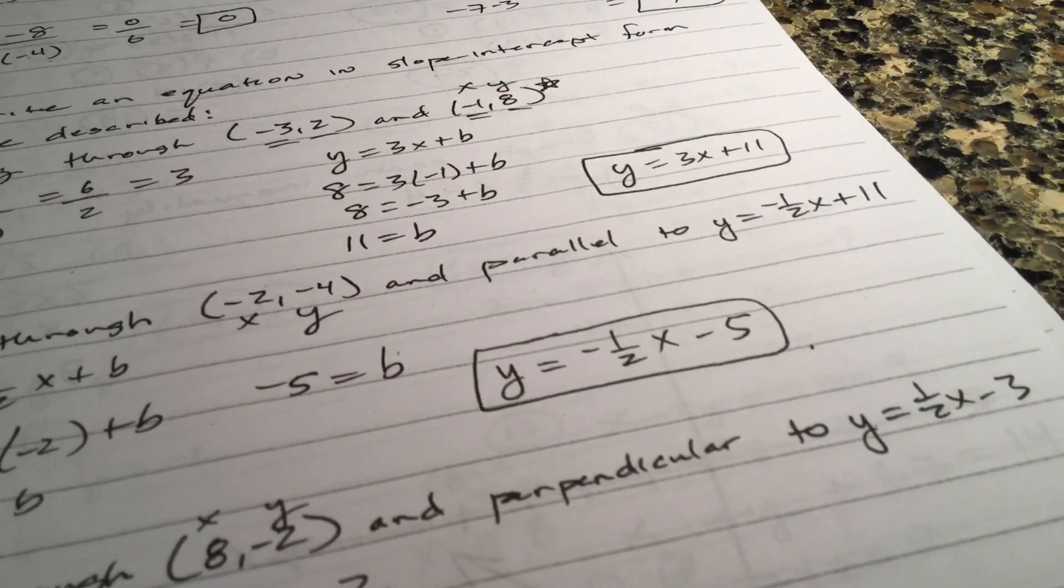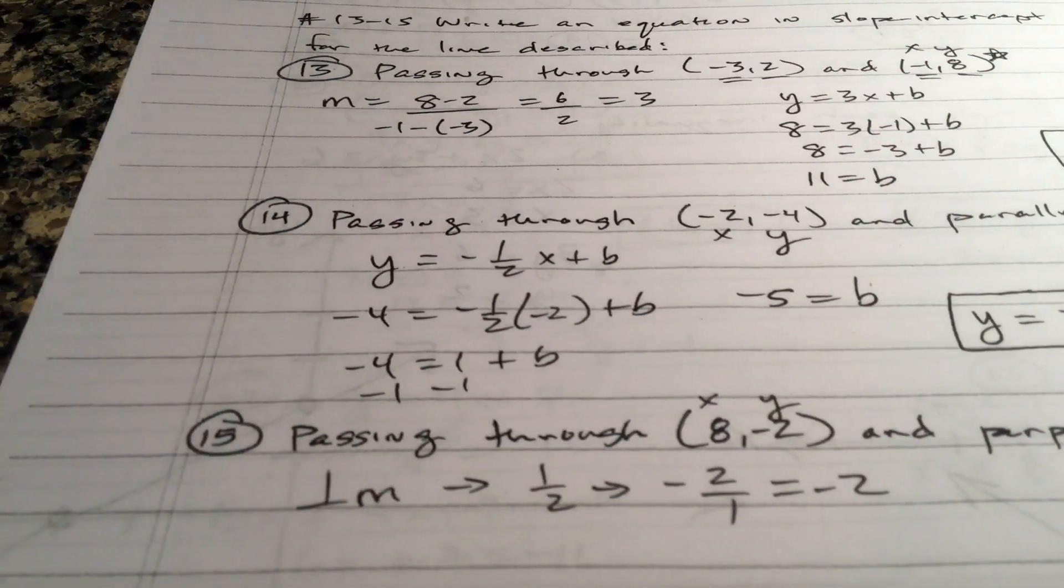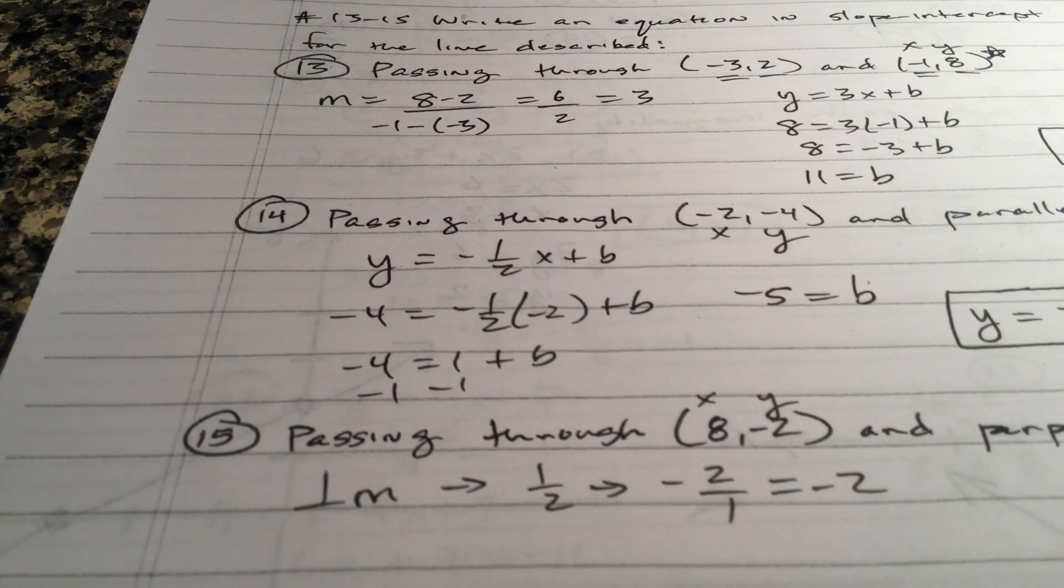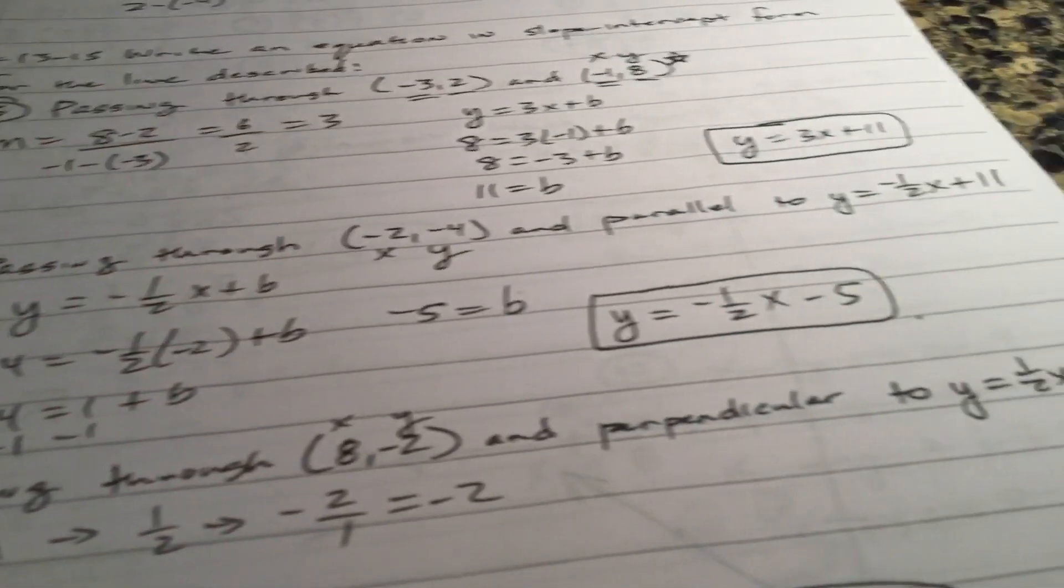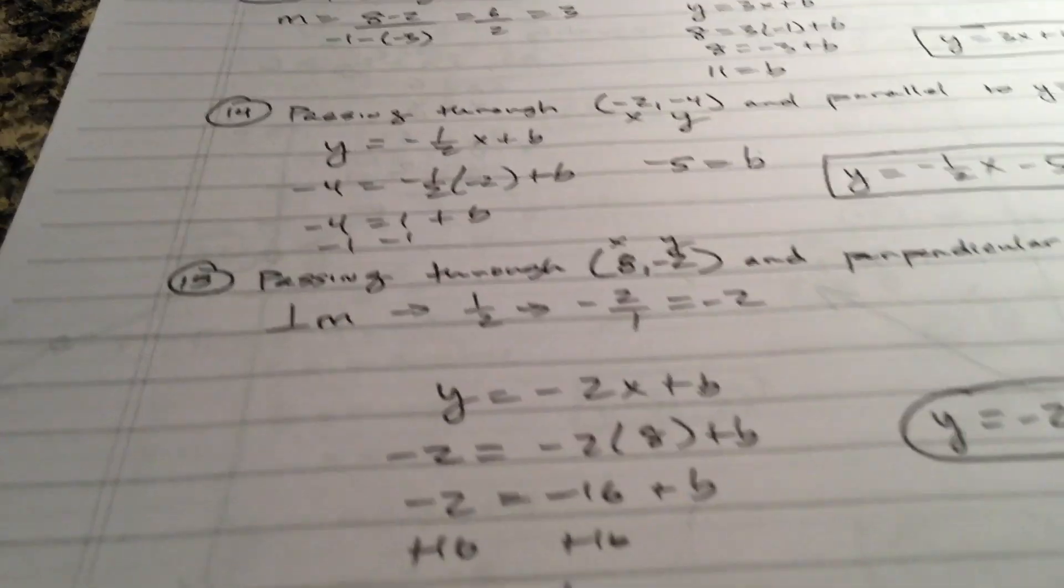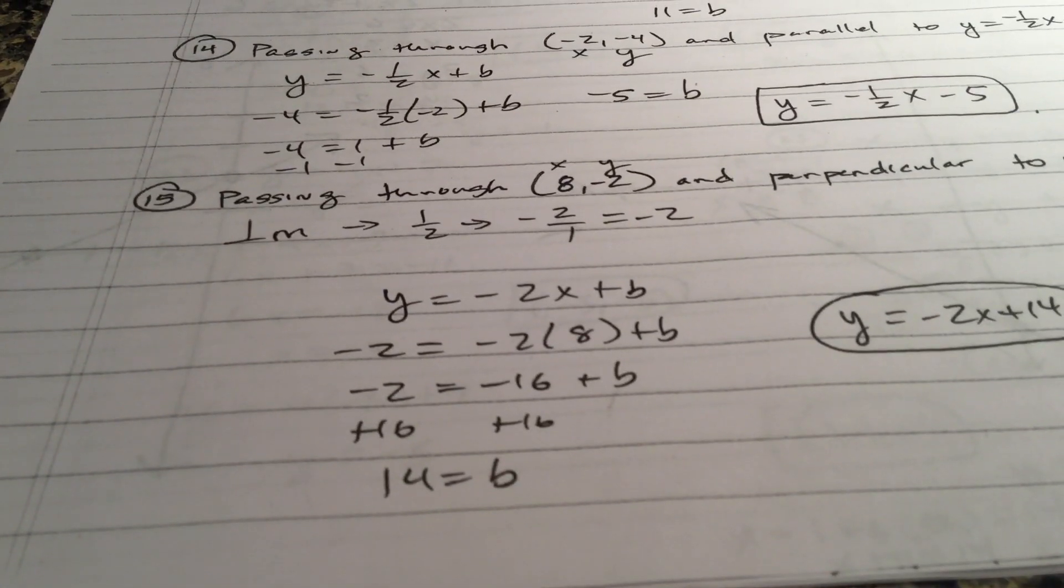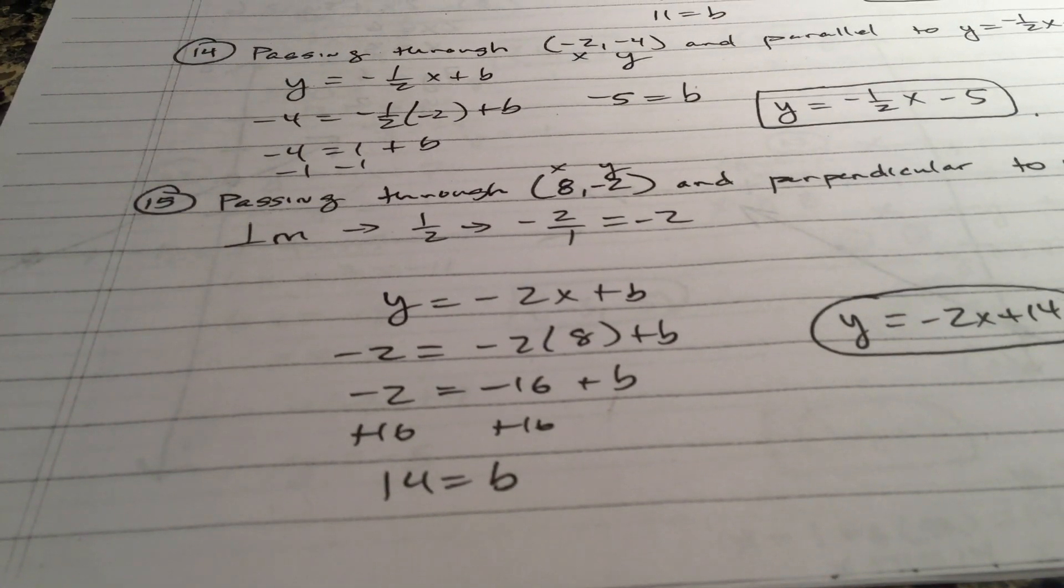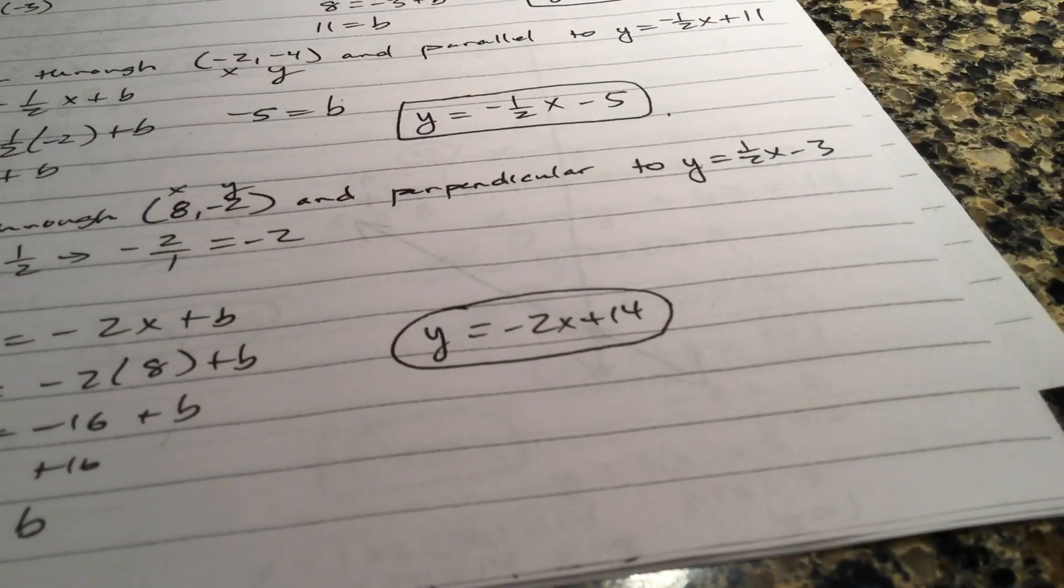Guys, if it's parallel, you have a parallel line, you know what the slope is. It's negative 1 half. So, negative 4 for y, negative 2 for x. The y intercept is negative 5. Perpendicular lines have opposite reciprocal slope. So, your slope is going to be negative 2. Plug 8 in for x, negative 2 in for y. Get a y intercept of 14.